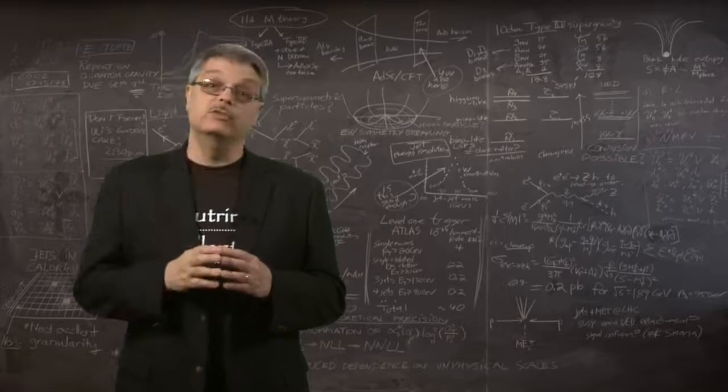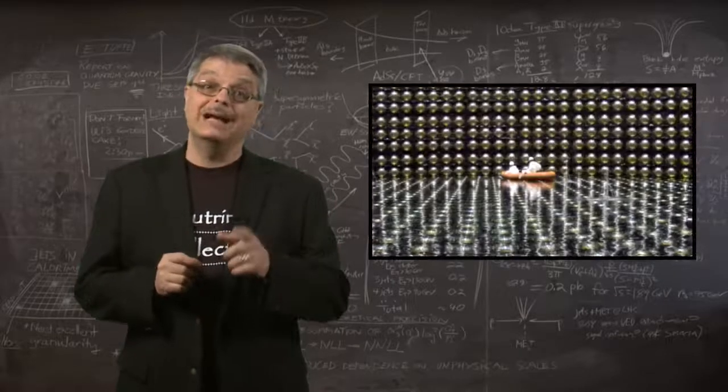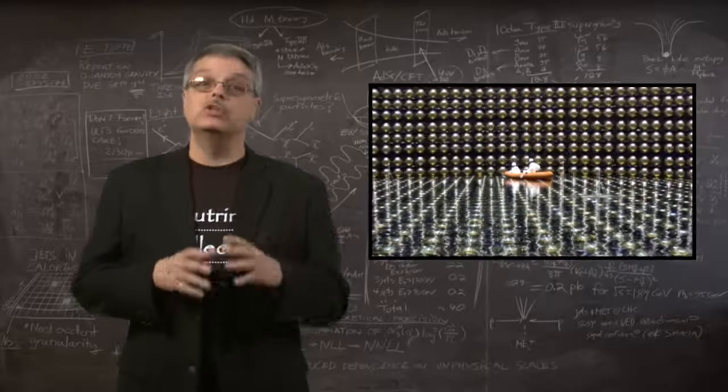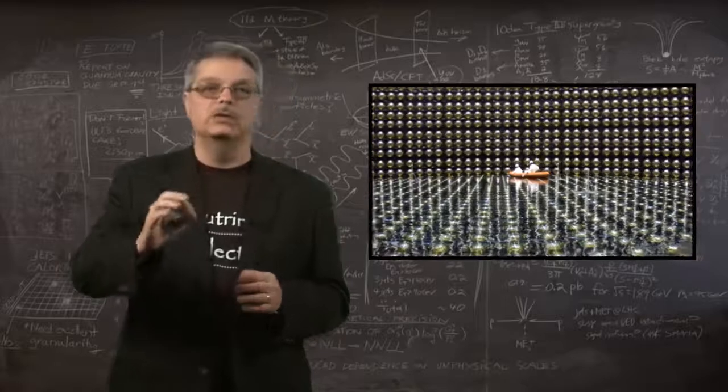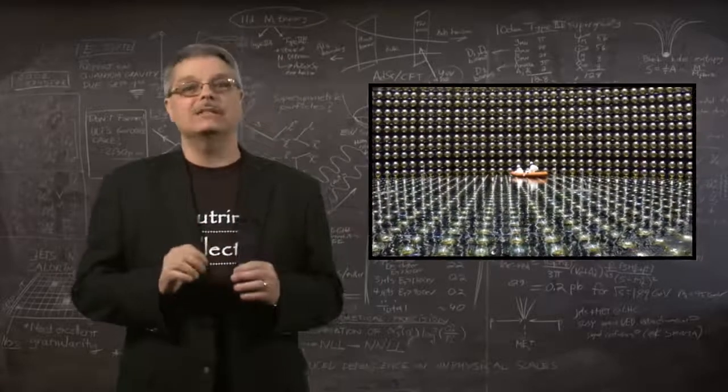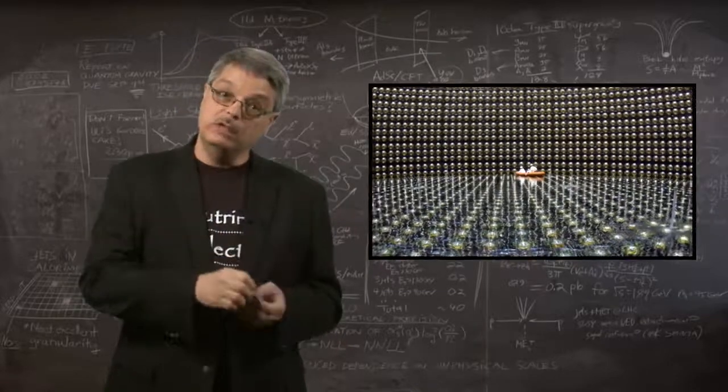The first compelling evidence for neutrino oscillations came in 1998, using the Super-Kamiokande experiment in Japan. This detector is a huge underground cavern filled with 50,000 tons of water, surrounded by detectors called phototubes.